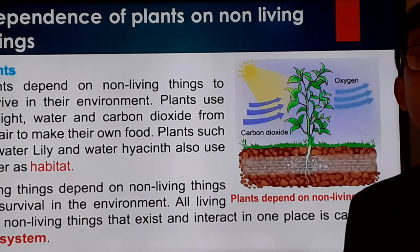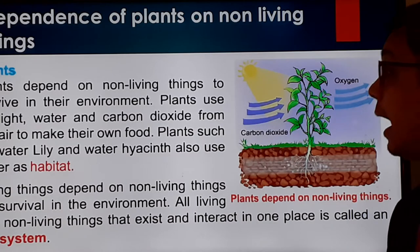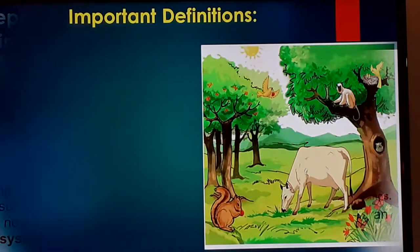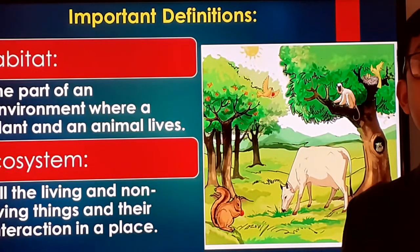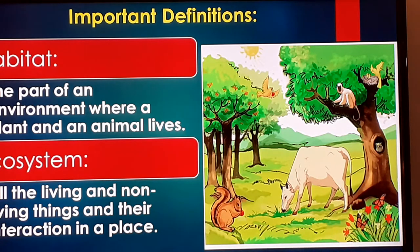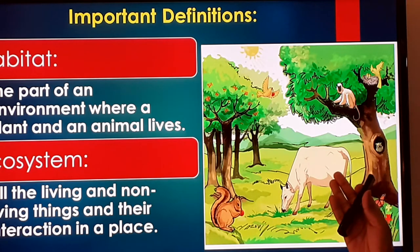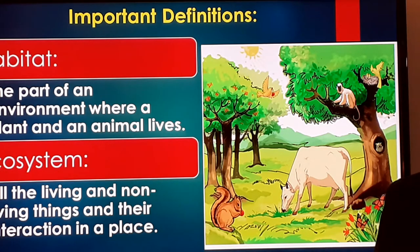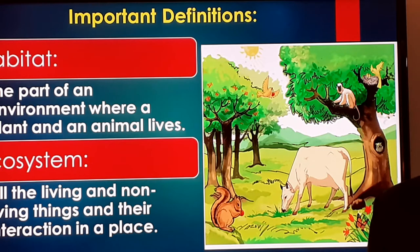From this picture, two important definitions arise: habitat and ecosystem. We live in an environment that consists of different types of living and non-living things. Ecosystem: all the living things and non-living things where they interact with each other — that particular place is known as an ecosystem. We humans, animals, and plants, all dependent on each other, also live in an ecosystem.